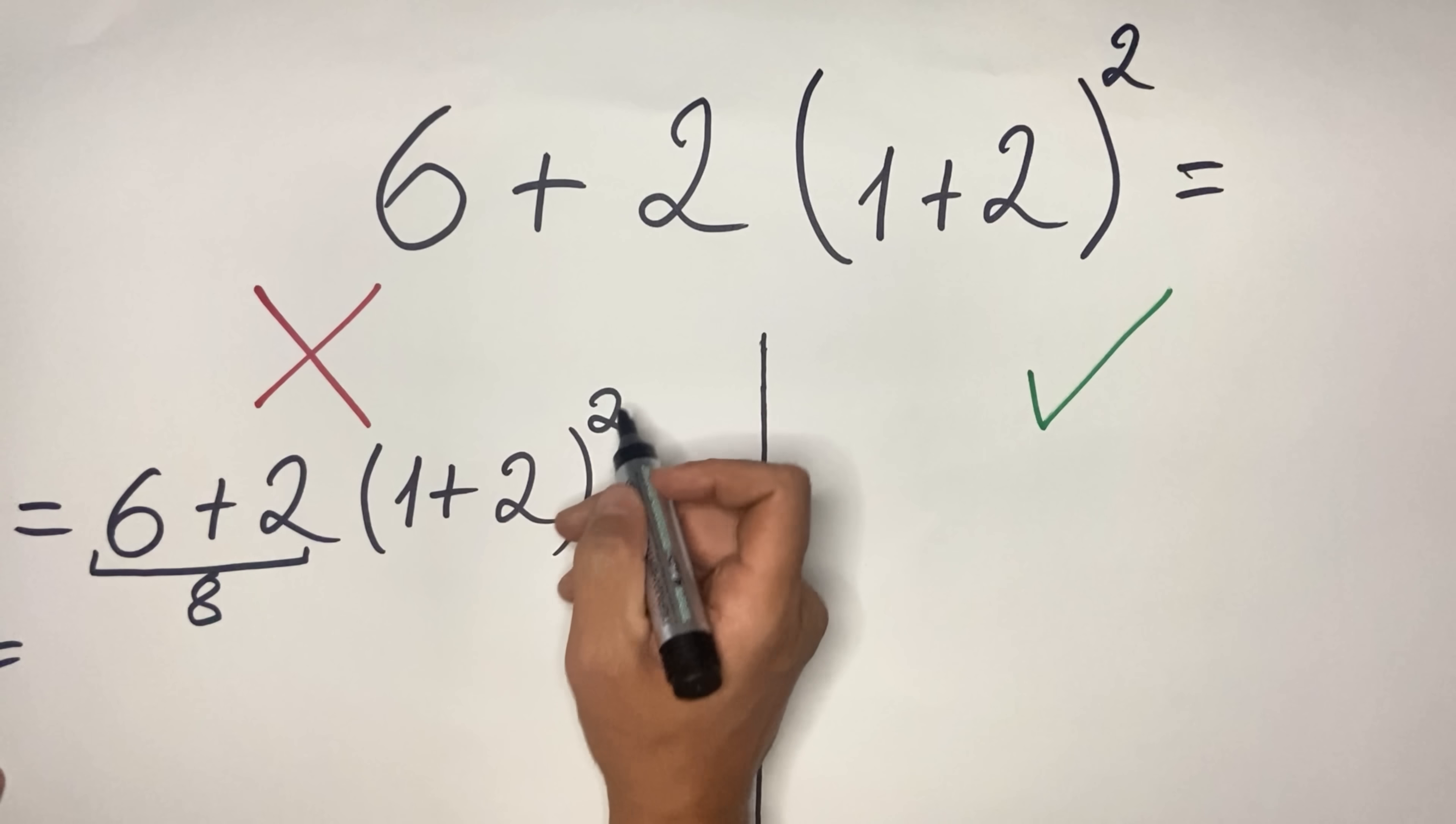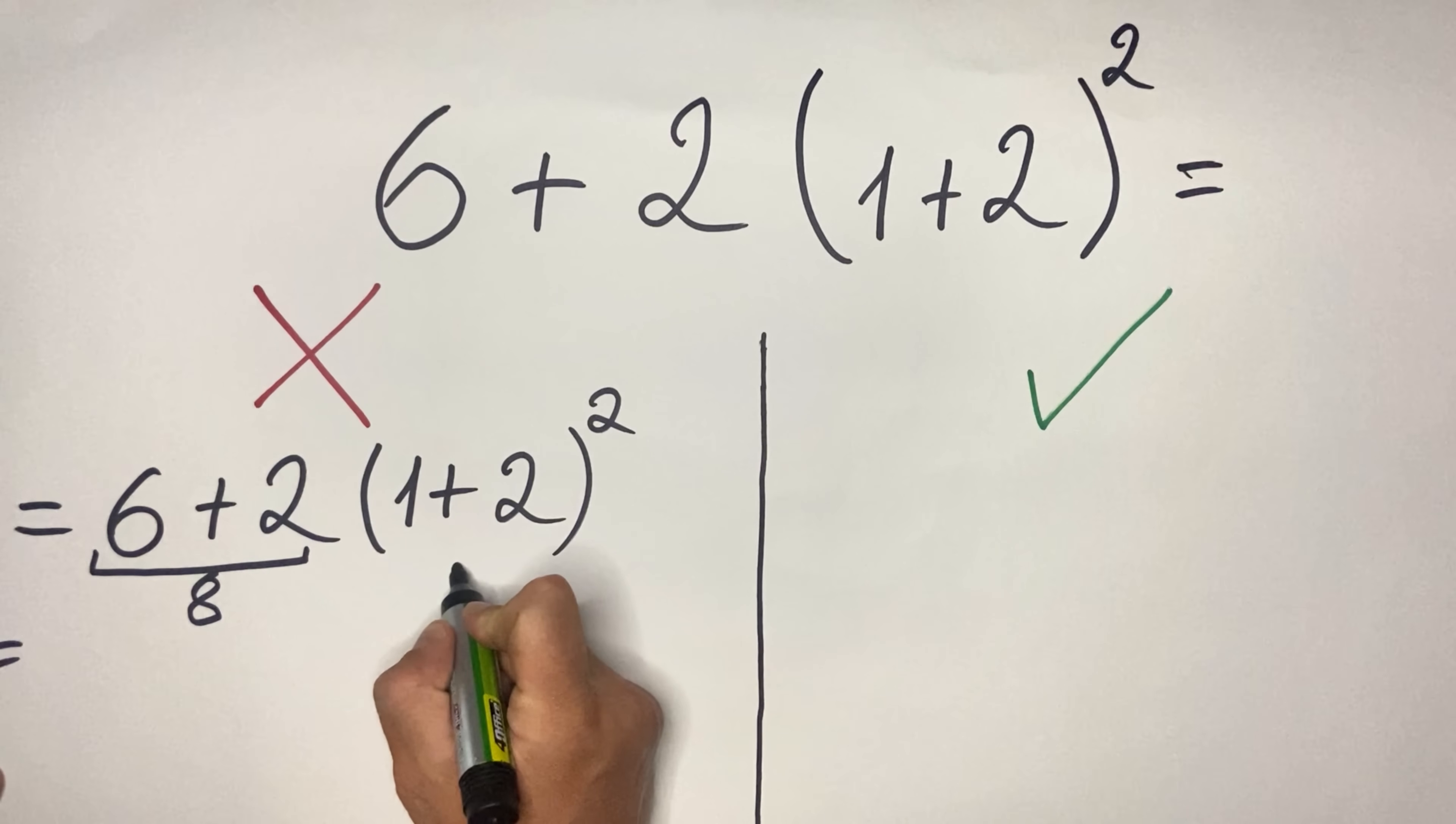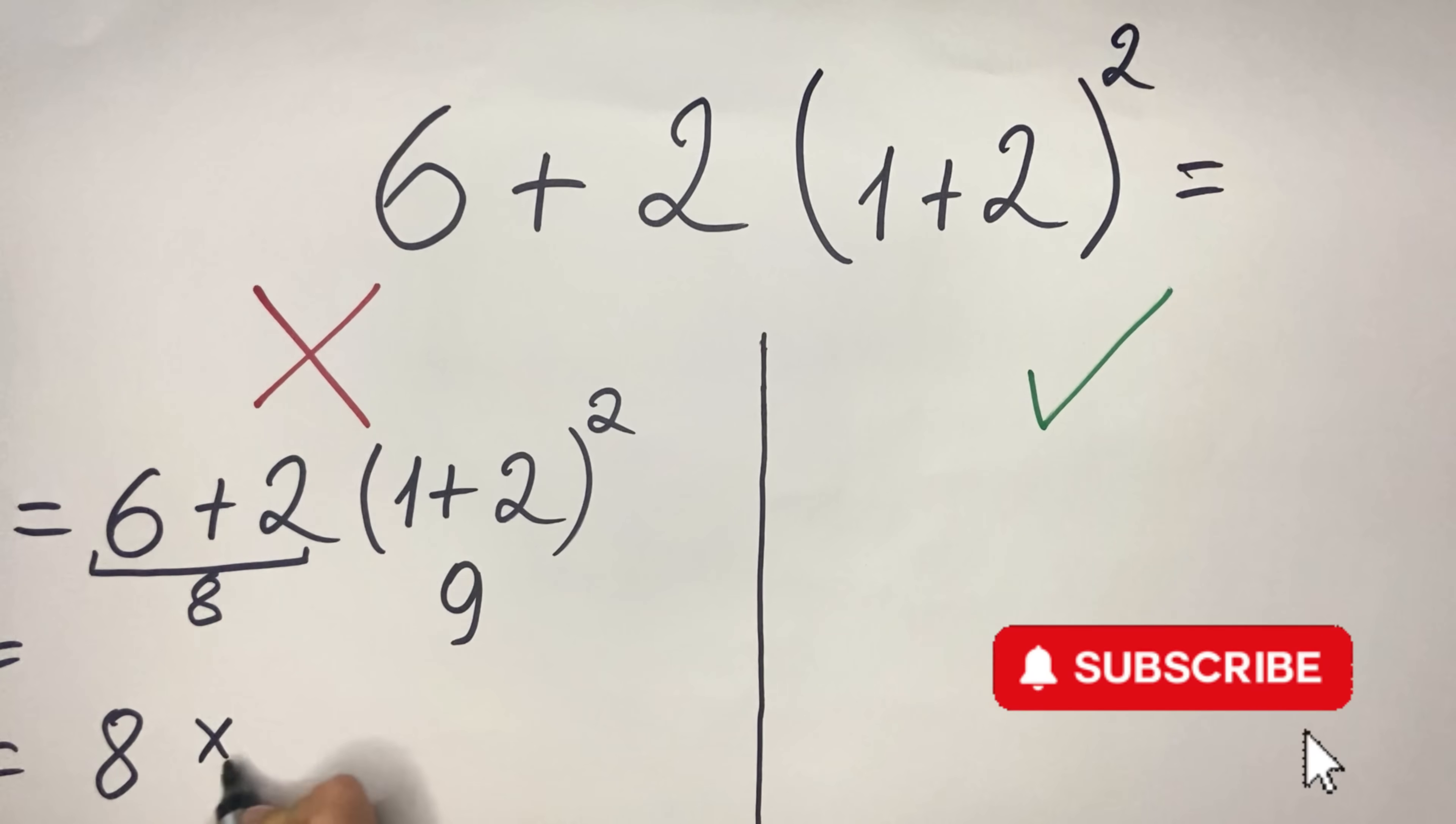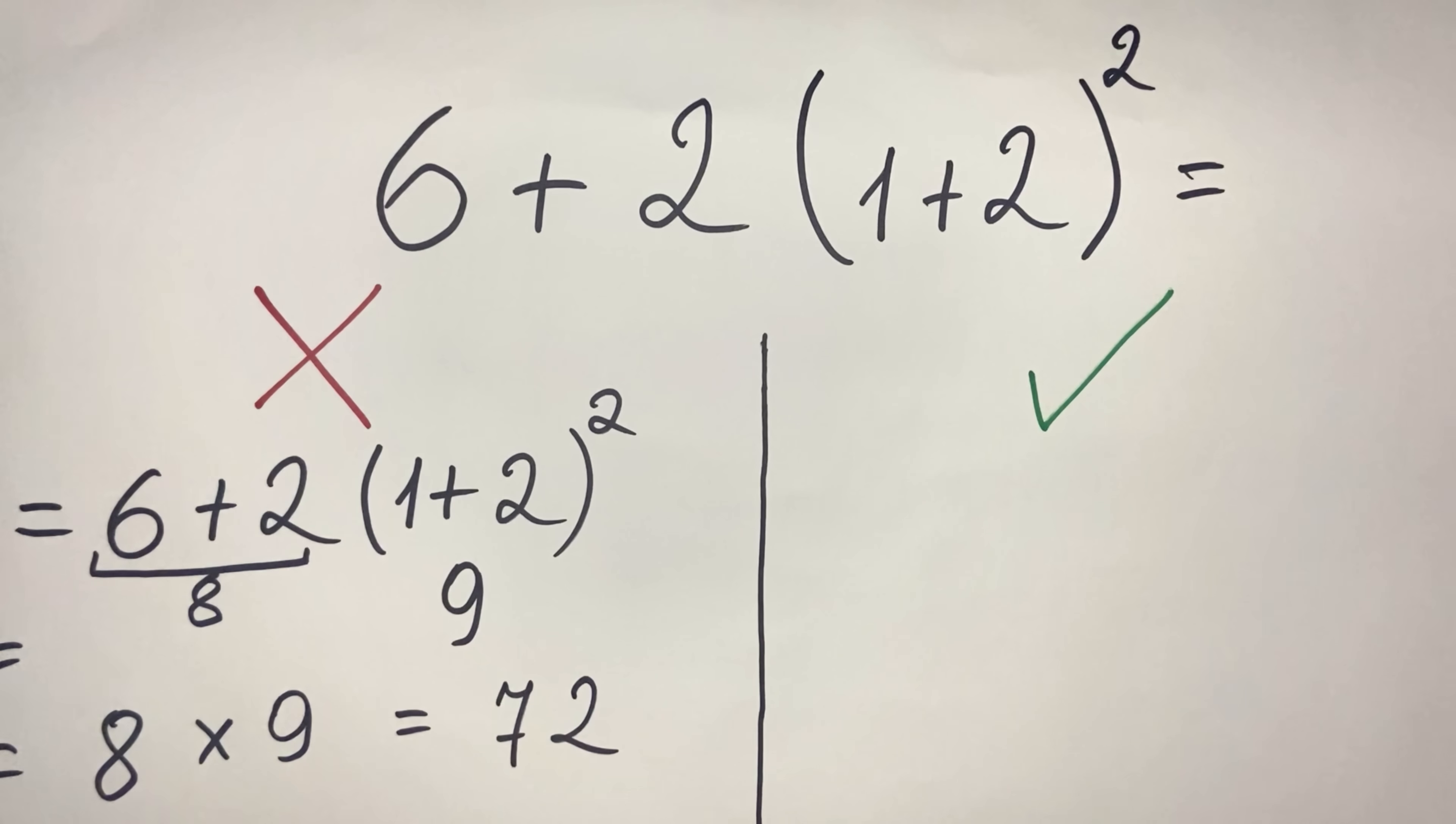...then they do the parentheses and then the square, so 1 + 2 is 3 squared, they got 9. And then they do the multiplication, so they get 8 multiplied by 9, and the result is 72. And of course, this result is not correct.